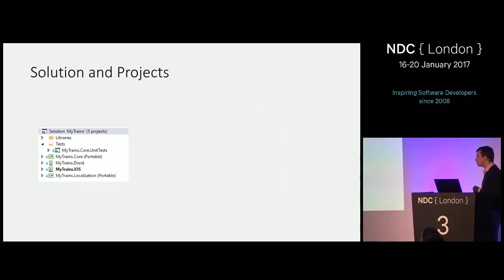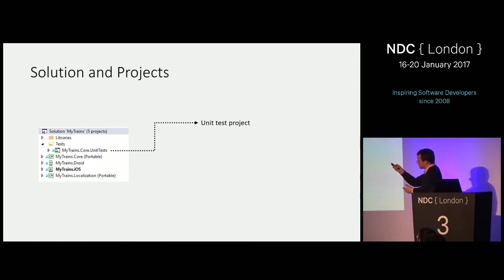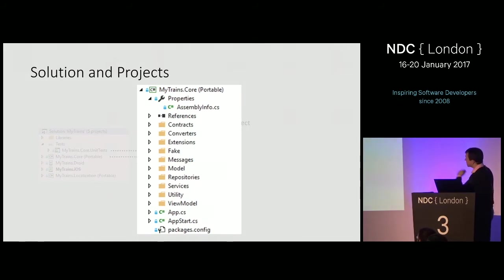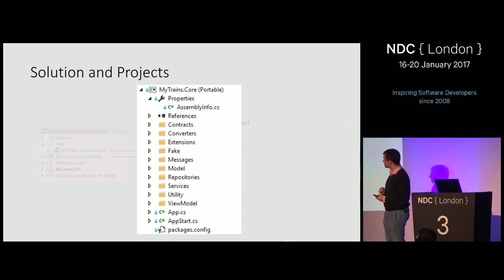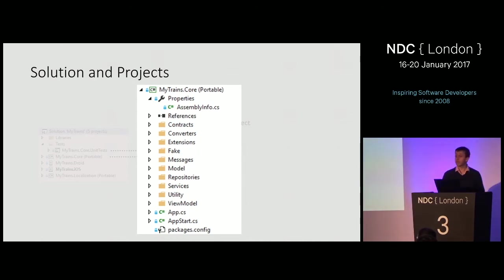Let's dive into the core project. Two important classes are at the root: the App class and the AppStart class — they handle the setup. Other content includes model classes, which are simple POCOs with no framework base class. I often request teams build with a client-side model, mapping from the JSON responses into an application-specific model, making the app more independent from backend changes. The repository and services layers are also in the core, and all of this — including view models — is shared code.